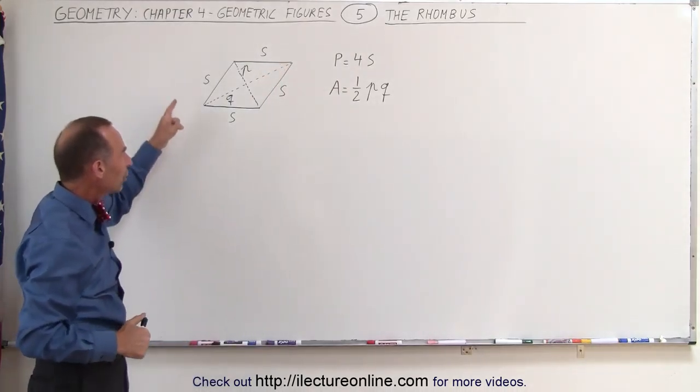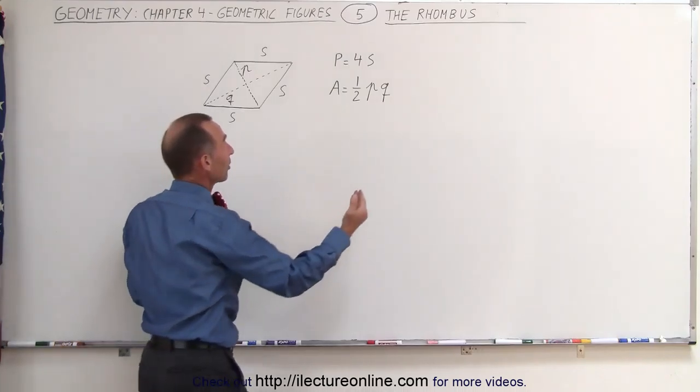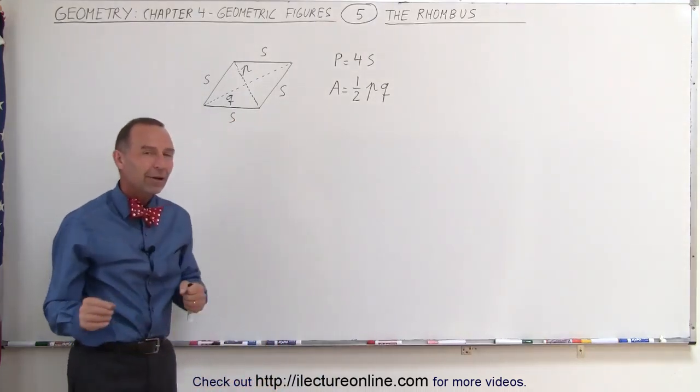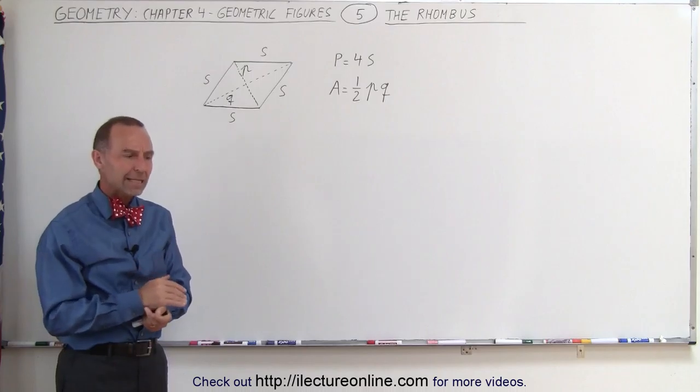We then realize that the perimeter of a rhombus will simply be the same as the perimeter of a square since all sides are the same. It is equal to four times the length of a side. But the area is one half the product of the diagonals P times Q.